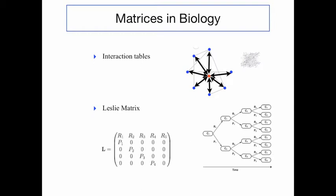The type of Leslie matrix in a general form that you might have seen earlier in the material looks like shown here, where specifically the values R1 through R5 refer to how strongly the first population interacts with all other populations, including itself.